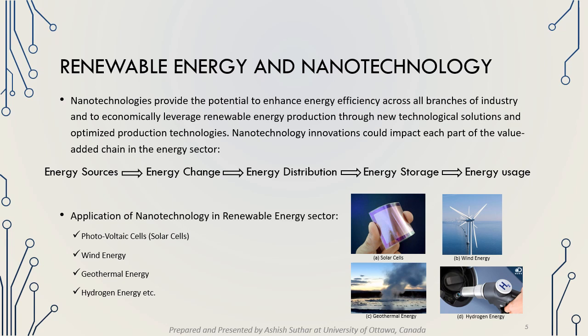In the field of energy sources, there are different sources such as solar cells, wind, geothermal, and biomass. The generated energy is converted into electrical energy in the energy conversion stage. This electrical energy is distributed through power transmission or smart grid. The distributed energy is stored in batteries or fuel cells, and then used in applications such as lighting, air conditioning, and thermal insulation.